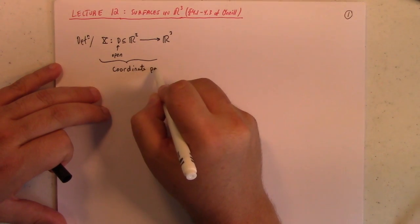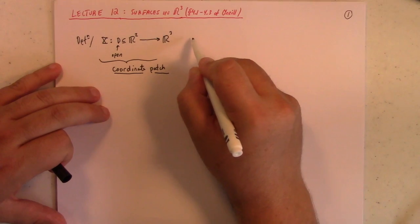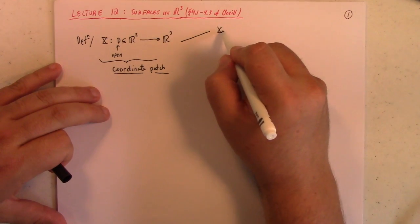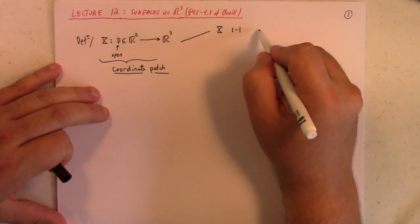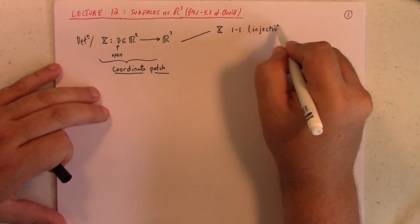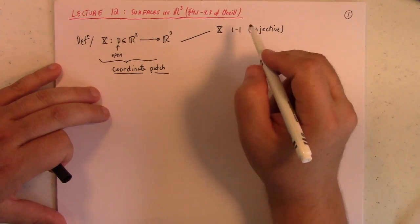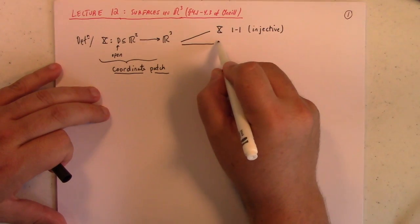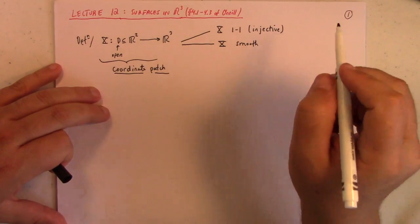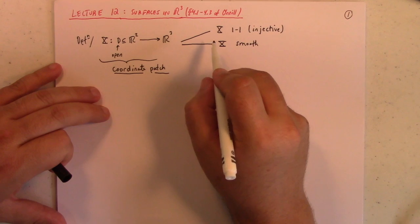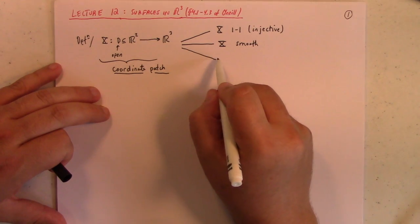So, this is a coordinate patch if you have three conditions. Number one, X has to be one-to-one. It has to be injective. Now, that's a global condition on the whole domain. It has to be smooth.